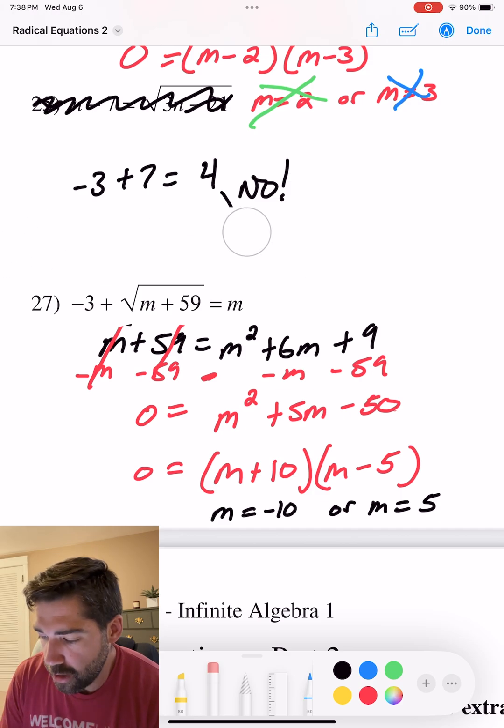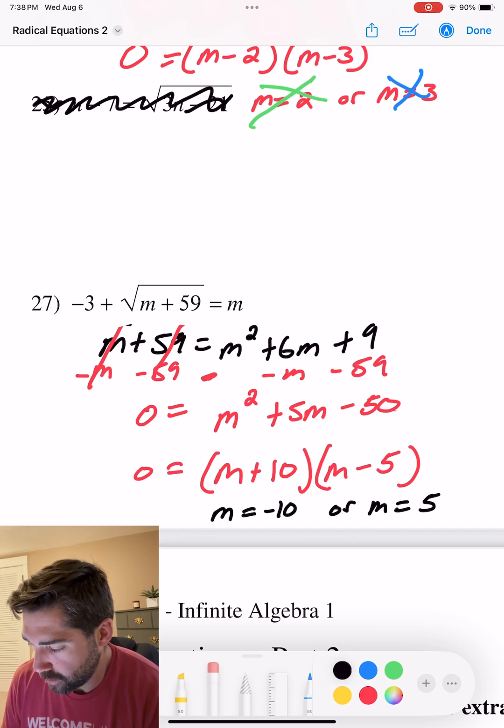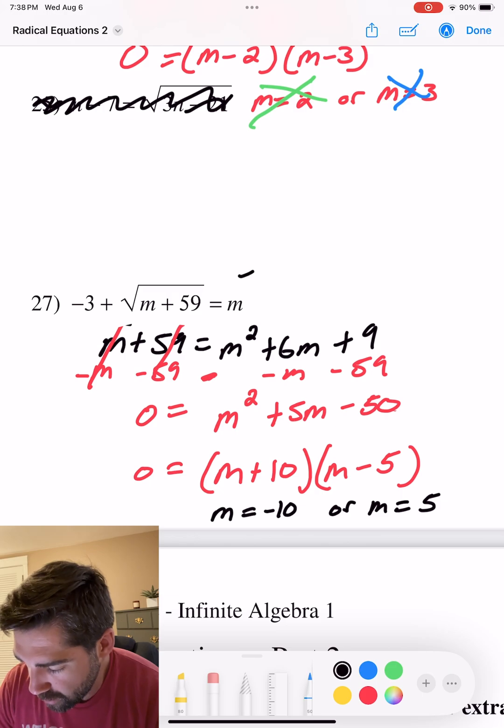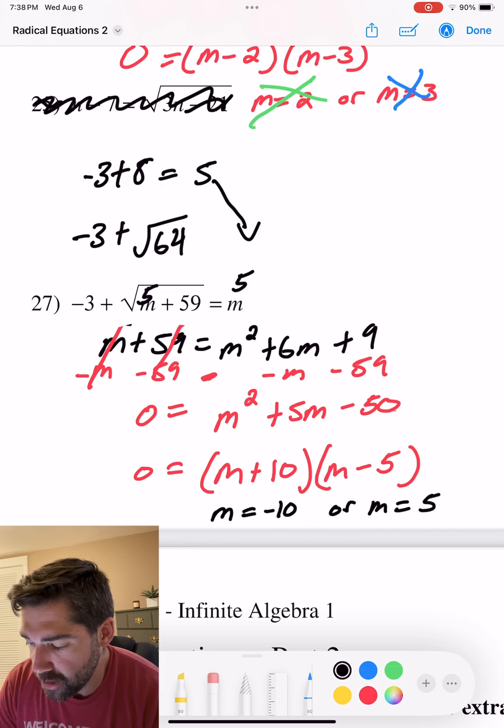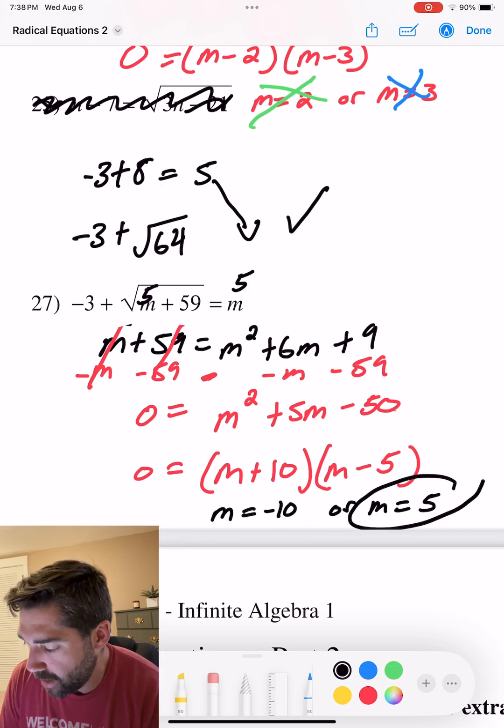Let's try 5. Hopefully 5 works. We know this answer has to be 5. We plug in 5 here. 5 plus 59, that's 64. That's nice. Negative 3. Negative 3 plus 8 is equal to 5. Is that our answer? That is our answer. Yes. So 5 works.